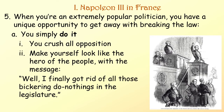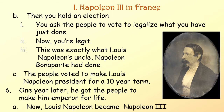When you're an extremely popular politician, you have a unique opportunity to get away with breaking the law. You simply do it, crush all opposition, and make yourself look like the hero of the people with the message: 'I finally got rid of those bickering do-nothings in the legislature.' Then you hold an election and ask the people to vote to legalize what you've just done — exactly what Louis-Napoleon's uncle Napoleon Bonaparte had done. The people voted to make Louis-Napoleon president for a ten-year term, and one year later made him emperor for life. Now Louis-Napoleon was known as Napoleon III.